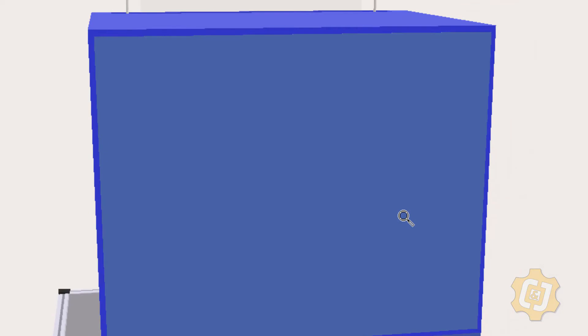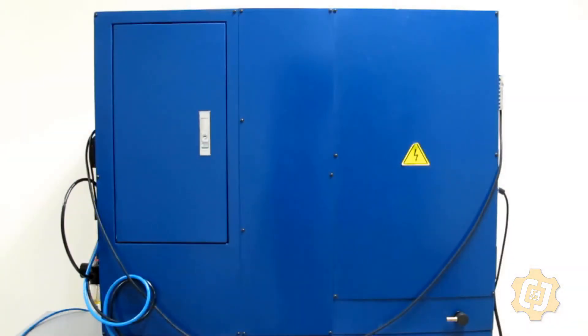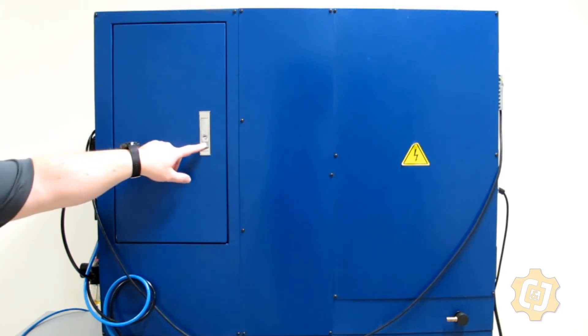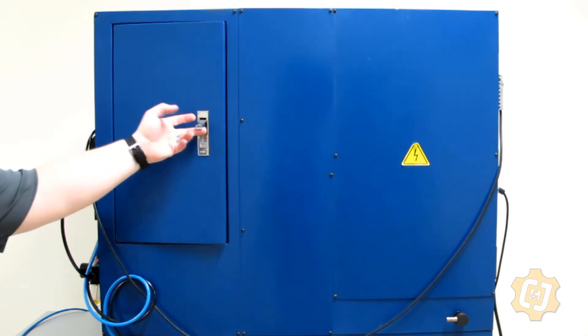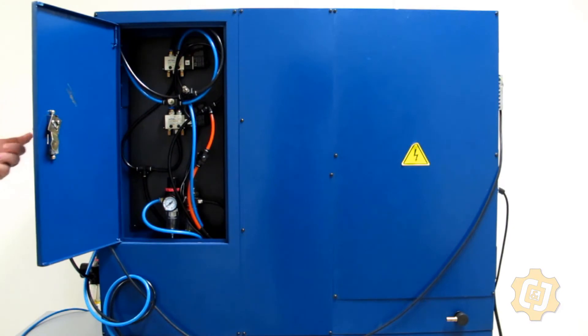Let's go ahead and move on to the back of the machine. So on the back of the machine, you can see that I do have an access door to a maintenance panel. So if I go ahead and open that up, we'll take a closer look at that.